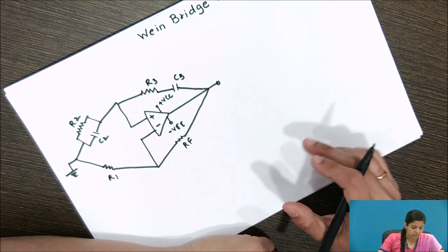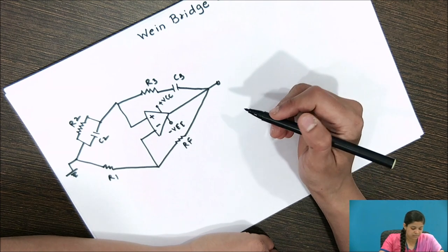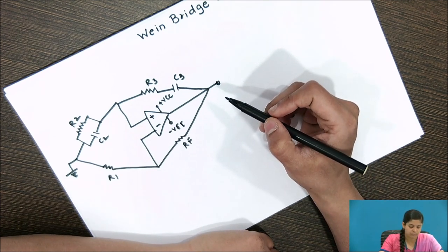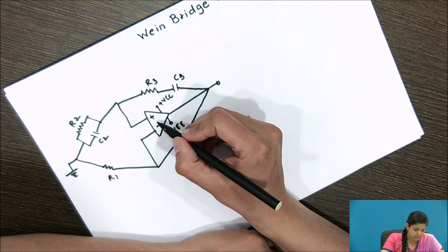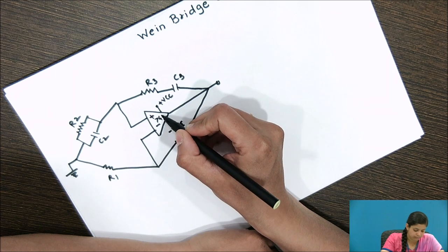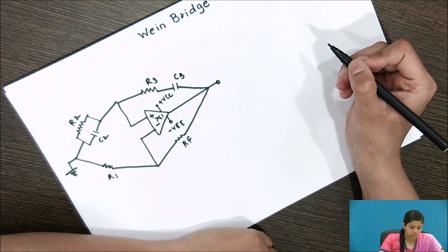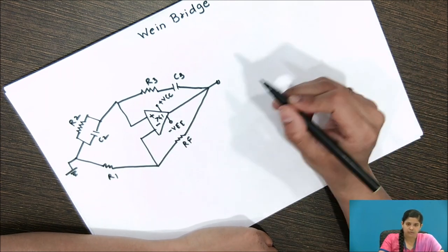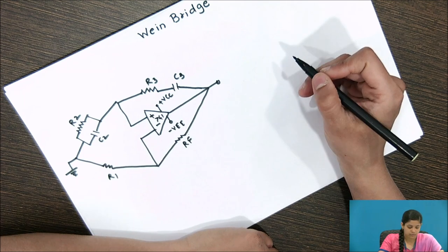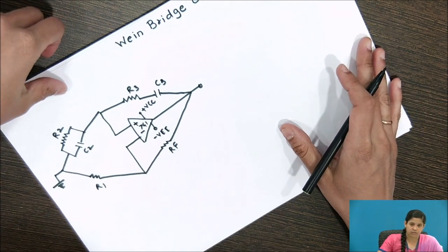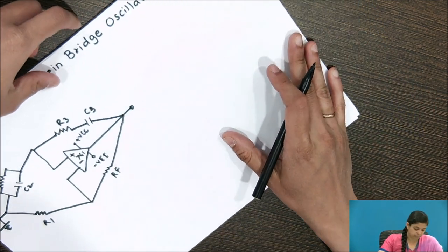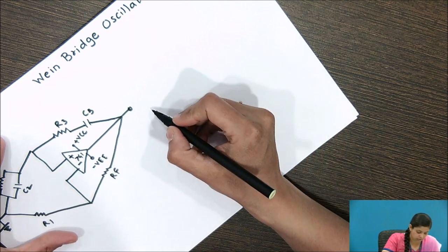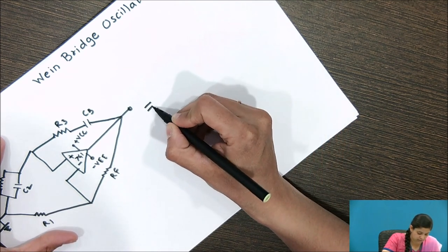As you can see here, the Wien bridge is connected between the input and output terminals of the operational amplifier, which is the 741. For the sake of convenience, we will modify this circuit and draw the equivalent circuit according to this diagram.